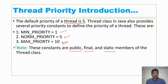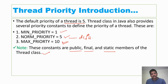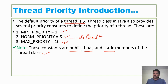By default, those constants are public, final, and static members of the Thread class. By default, a thread has normal priority. If you want to assign minimum priority or maximum priority, you can do so explicitly.